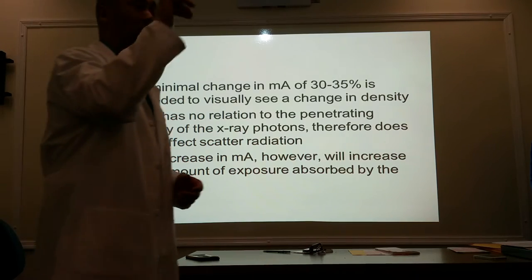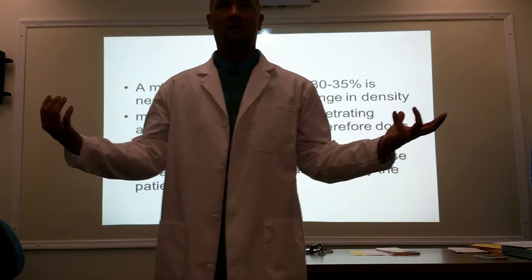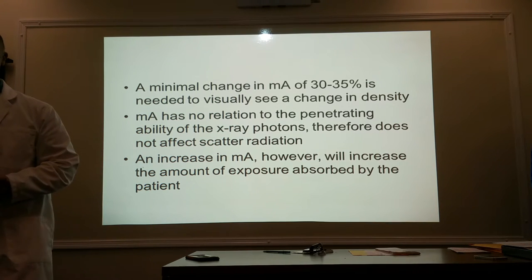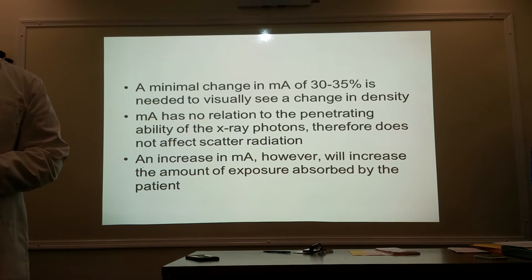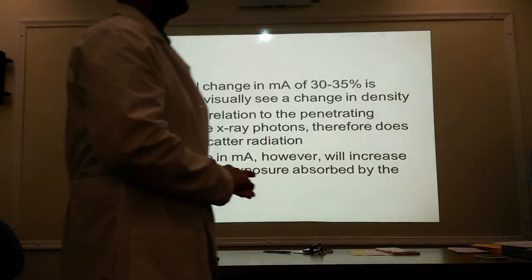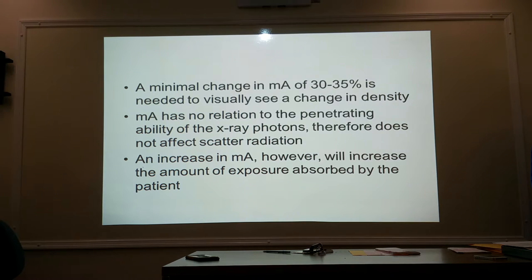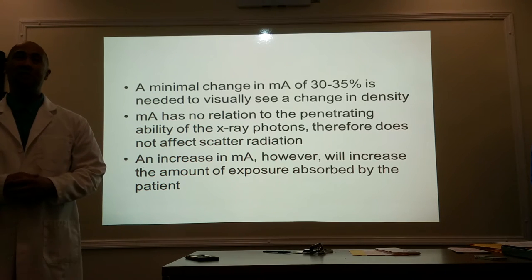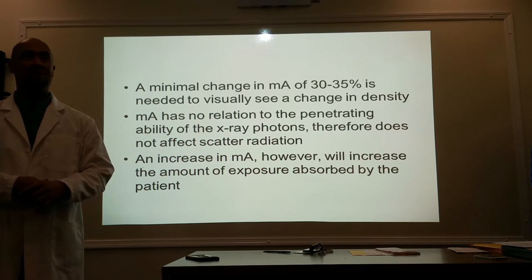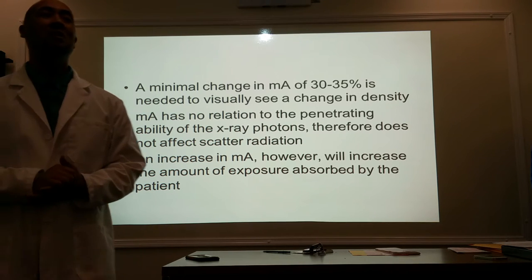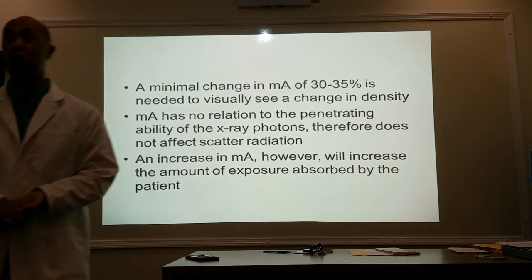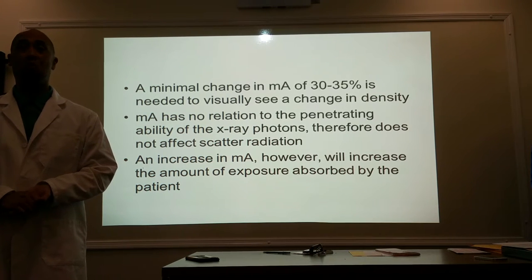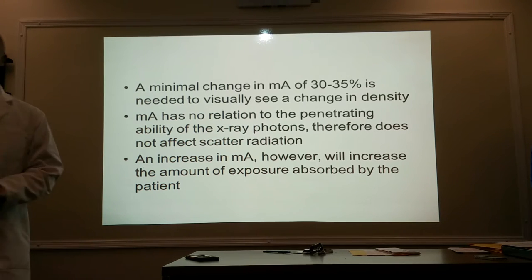Here's the nuance. Although MA is very proportional — you double it, you double it; you cut it in half, it cuts in half — all you need is a minimal change of 30 to 35% to see a visual change in your density. So why don't we just do that? Because doubling and cutting it in half is just a lot easier. You can do that with MAS but not with KV's 15% rule. You usually go in doubles just because it's easier — you can do it in your head.